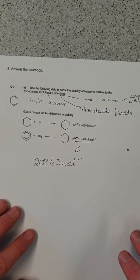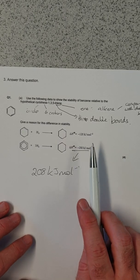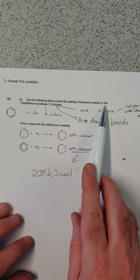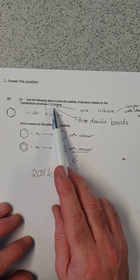So this is the last question in the cover work from the previous lesson. And this question asks, use the following data to show the stability of benzene relative to the hypothetical cyclohexa-135-triene.